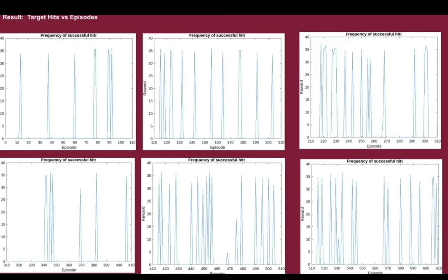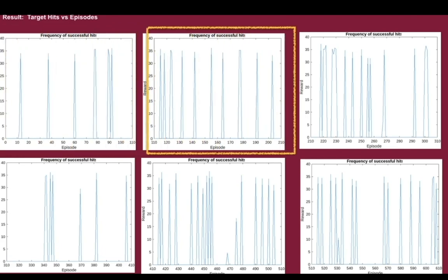Now we have a look at the results. In the first plot from episodes 0 to 110, you see sparse spikes representing the number of times the drone got close to or hit the target. Moving to the next 110 episodes, from 110 to 210, the frequency of spikes goes up, indicating the drone hits the target more often. The general trend is that the frequency of spikes keeps increasing with the number of training episodes, which is indicative of the fact that we are hitting the target more and more often.